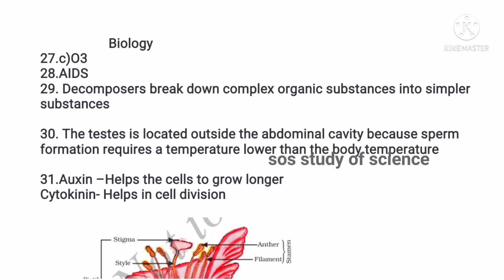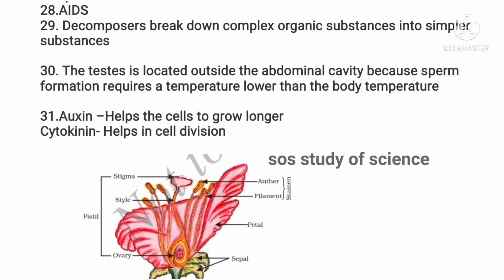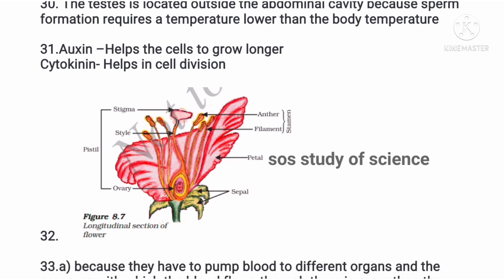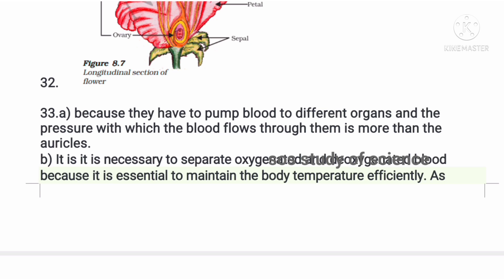Now moving to Biology, which was very easy. The twenty-seventh question MCQ answer is ozone (O₃). The next question: sexually transmitted disease caused by a virus is AIDS. Decomposers break down complex organic substances into simple ones. Testes are located below the abdominal cavity because sperm formation requires lower temperature. Plant hormones asked: auxin helps cells grow longer, and cytokinin helps in cell division. The next question asks for a longitudinal section of a flower diagram.